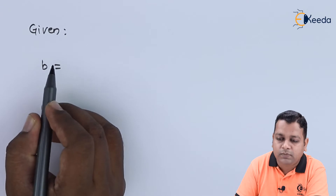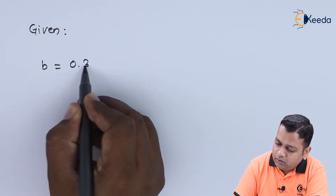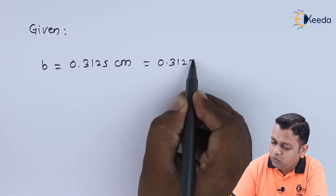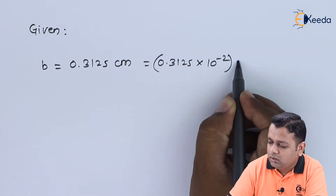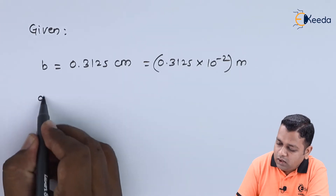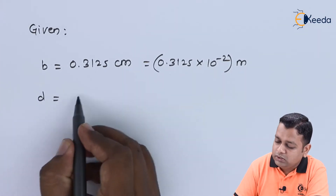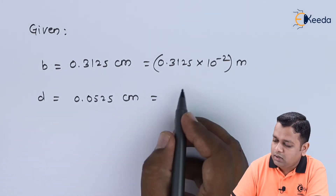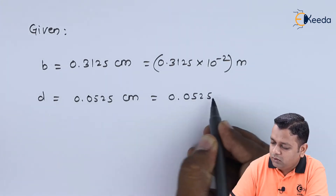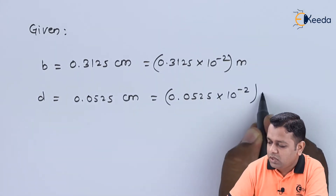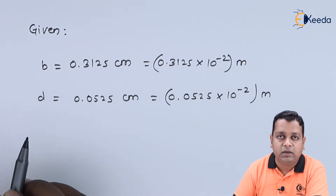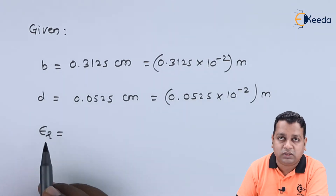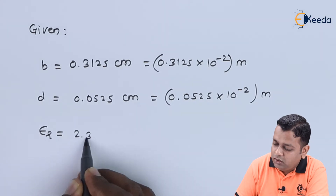The value of small b is equal to 0.3125 centimeters, which can be written as 0.3125 × 10⁻² meters. The diameter of the circular conductor d is equal to 0.0525 centimeters, or 0.0525 × 10⁻² meters in SI units. The third given value is the relative dielectric constant for the insulating material, which is 2.32.